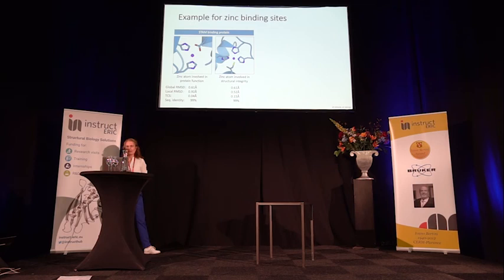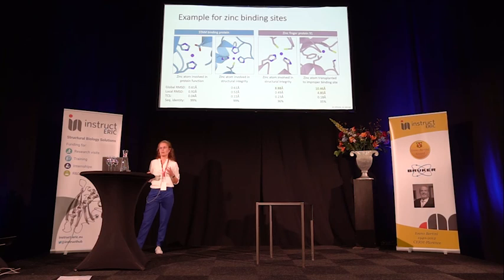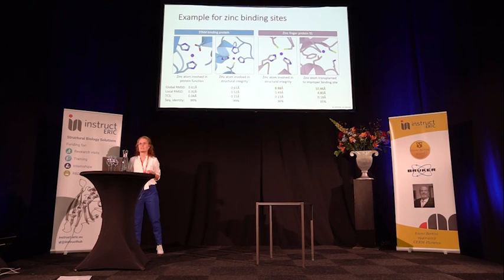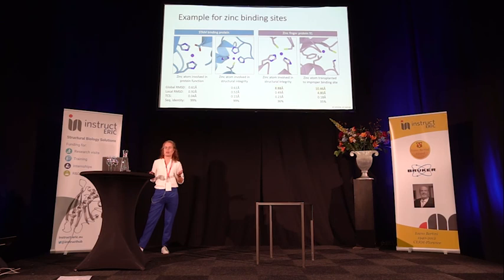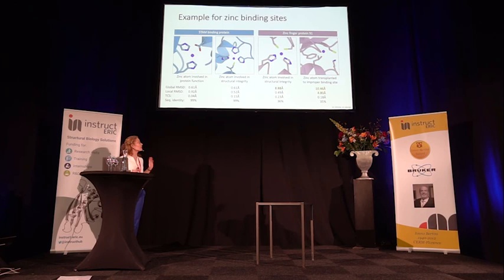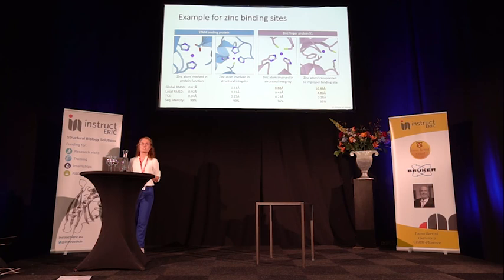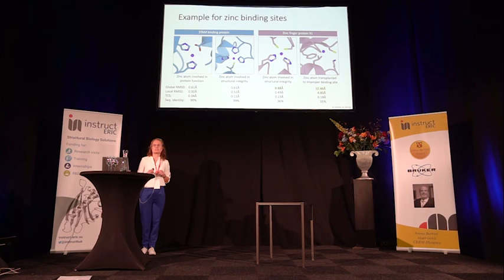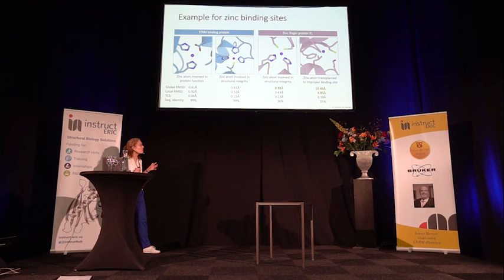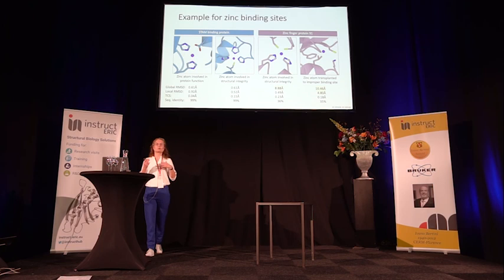Looking at zinc finger protein 91, there are no close homologues, so the zinc atoms are transplanted from about 35–36% sequence identity. This is immediately reflected in the global RMSD, which is rather high in both cases, indicating the overall alignment wasn't accurate. The left zinc site still looks like a proper structural integrity site, and the local RMSD and clash score confirm it's a proper transplant. However, on the right, the local RMSD is flagged as suspicious — and looking at that zinc binding site, it doesn't look like a proper zinc binding site. This is a transplant you should ignore. Importantly, if you had only looked at the clash score, you might have thought the zinc was placed properly — which it's not. You need to look at all three quality indicators.